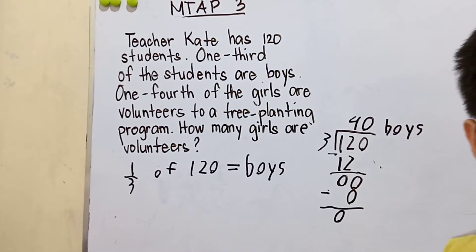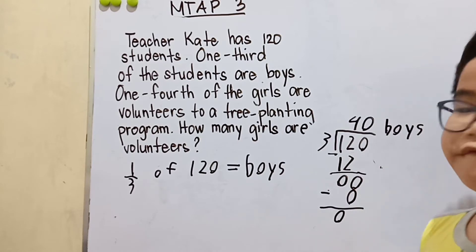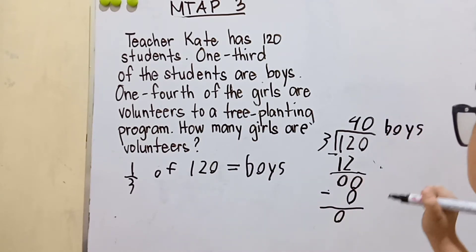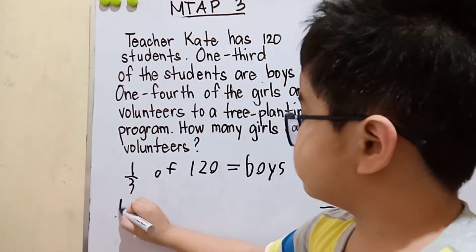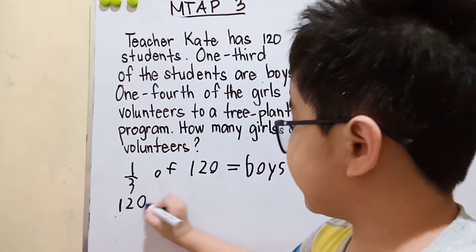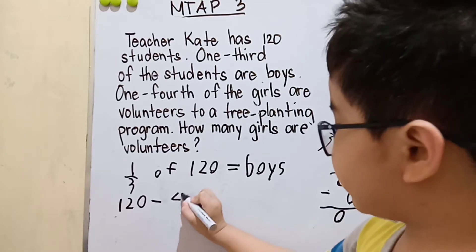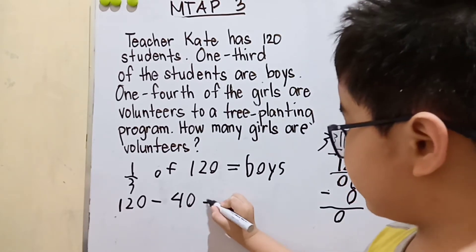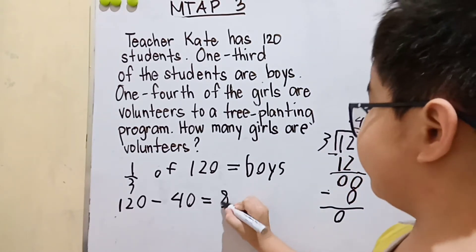Now let's get the number of girls. 120 students minus 40 boys, we have 80 girls.